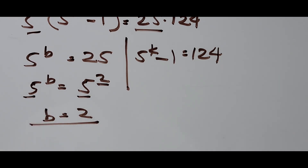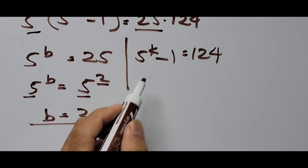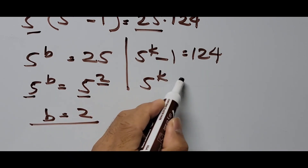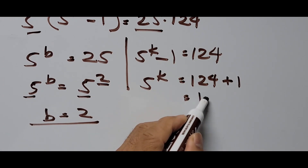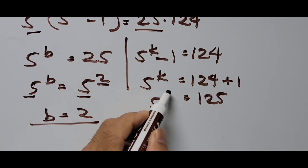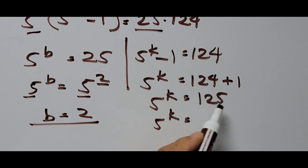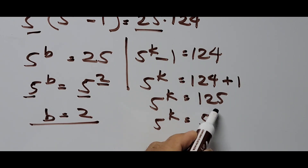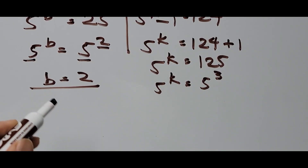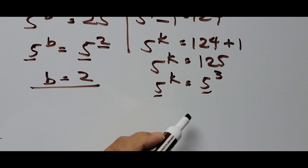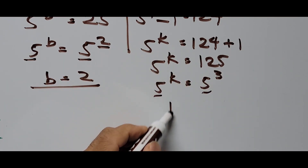On the other hand, to find the value of K, we simplify: 5 raised to K minus 1 equals 124. Transposing the negative 1 to the other side gives 5 raised to K equals 125. And 125 is 5 raised to the third power. Since we now have the same base, the exponents are equal, so K equals 3.